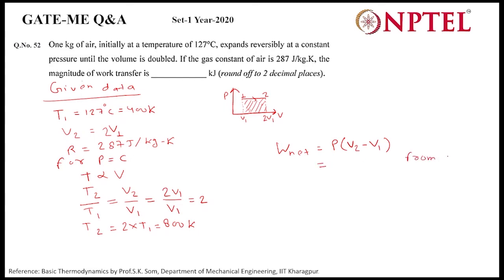From the ideal gas equation, the value of this region equals m times R times T2 minus T1.